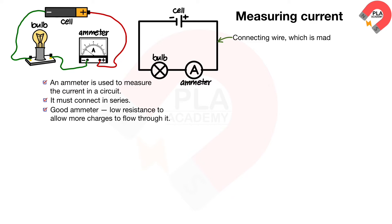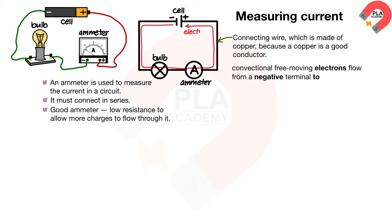This is the connecting wire, which is made of copper, because copper is a good conductor. The conventional free-moving electrons in copper flow from a negative terminal to a positive terminal of a cell.